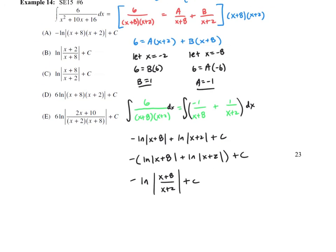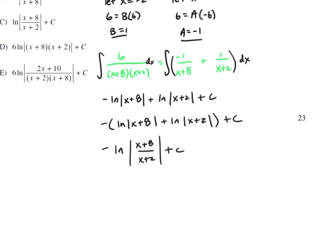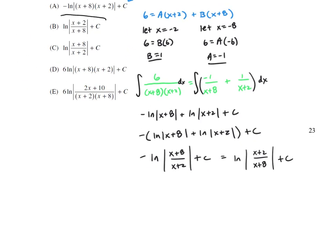Looking at the answers, option C stands out, but C is not negative. Using the logarithm property where we raise the argument to the power of negative one — which reciprocates the argument — this is equivalent to ln|(x+2)/(x+8)|. That's a little tricky, but this is option B.